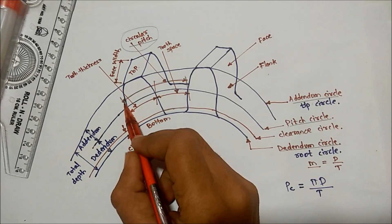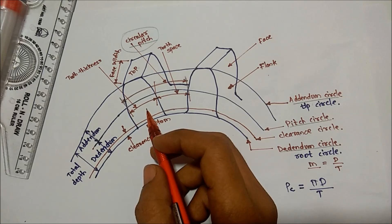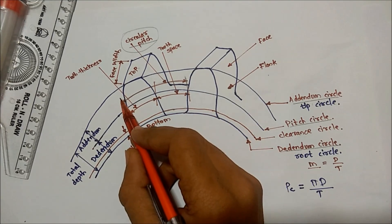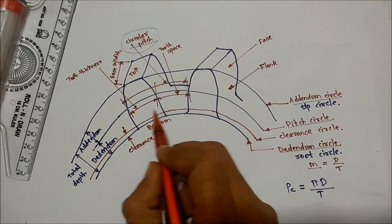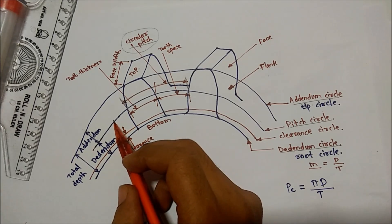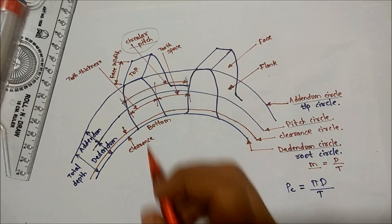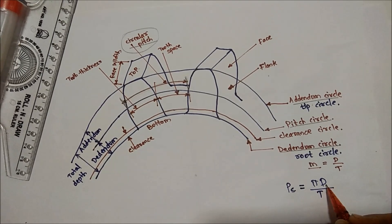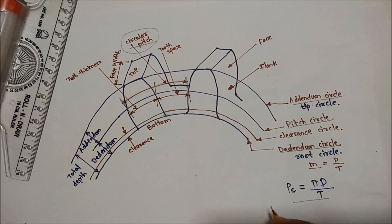Circular pitch is the distance measured on the circumference of the pitch circle from a point on one tooth to the corresponding point on the next tooth. It is expressed as PC = π·D / N, where D is the pitch circle diameter and N is the number of teeth. For correct meshing of gears, the circular pitch must be the same.